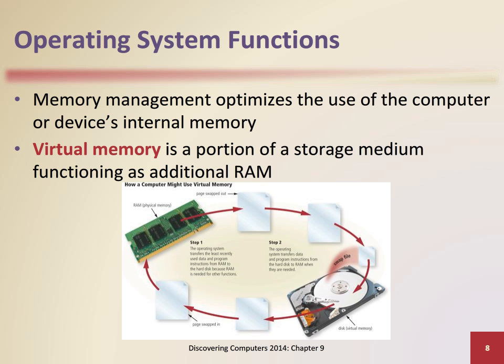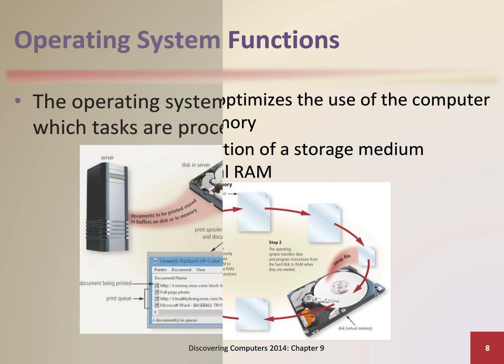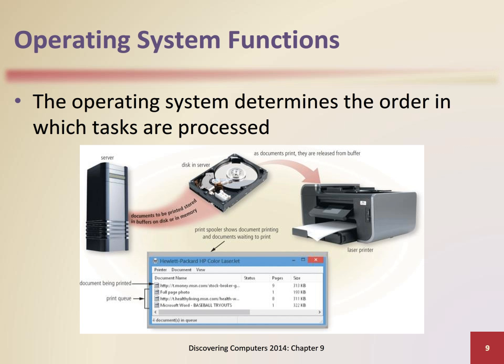With virtual memory, the operating system allocates a portion of a storage medium, such as the hard disk or a USB flash drive, to function as additional RAM. One job of the operating system is to determine the order in which tasks are processed.